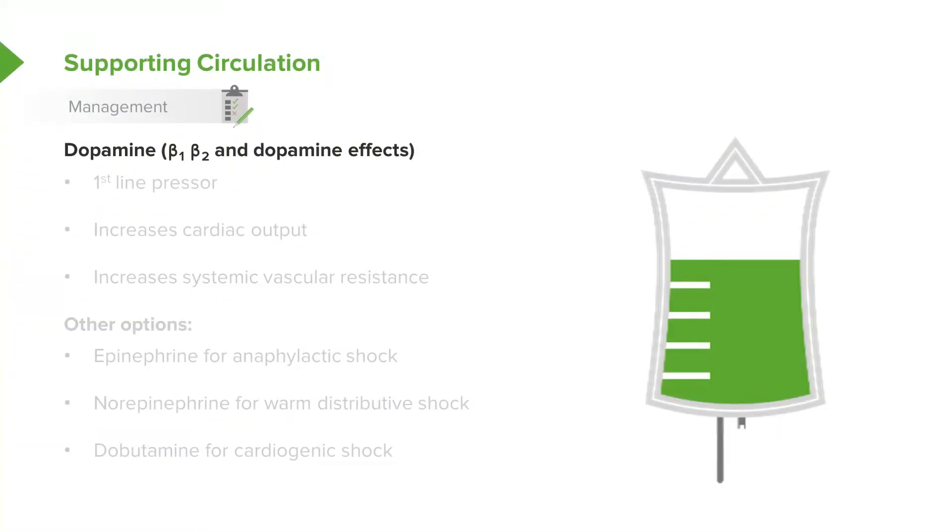So what are those? Well, generally in children, we start with dopamine. Dopamine has both beta-1 and beta-2 effects and it is a first-line pressor-supportive drug for children. It increases cardiac output which can't hurt and it increases the systemic vascular resistance.